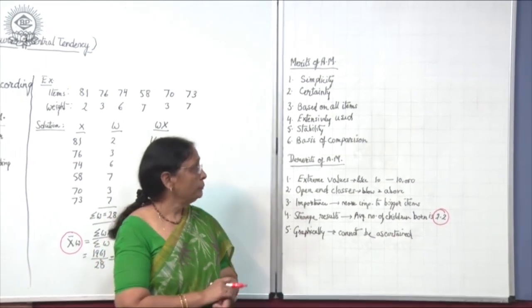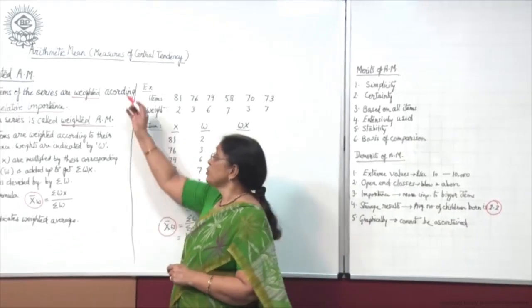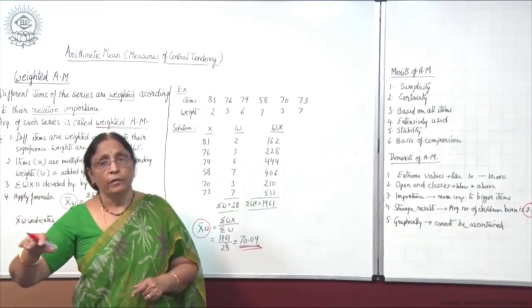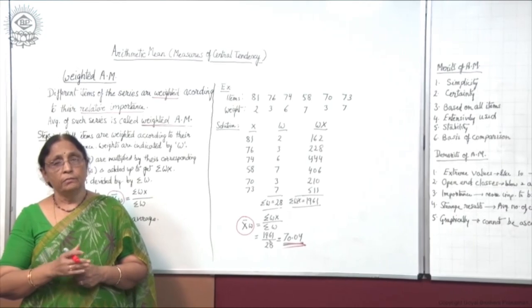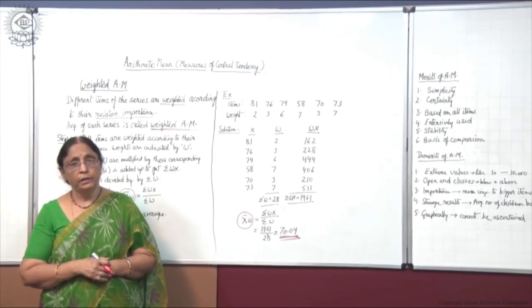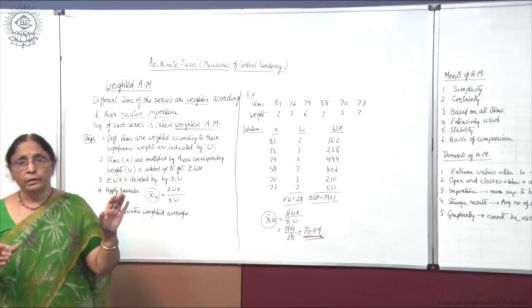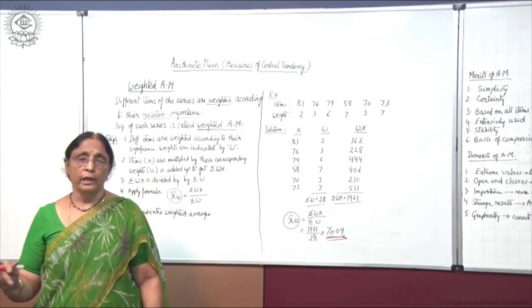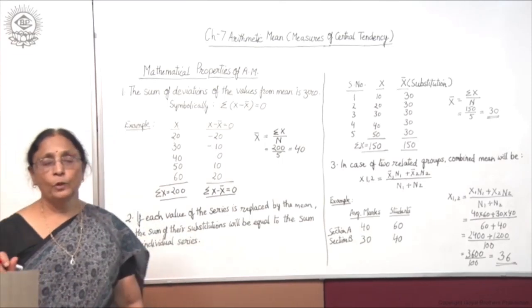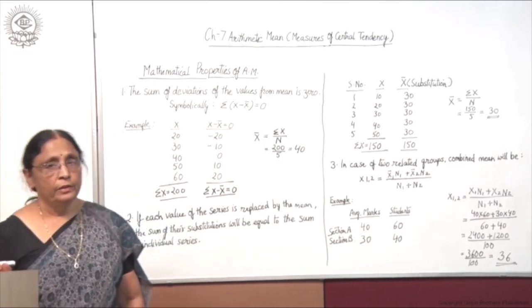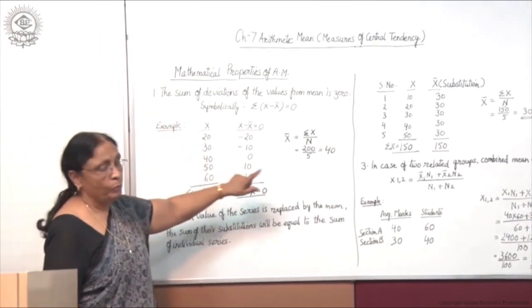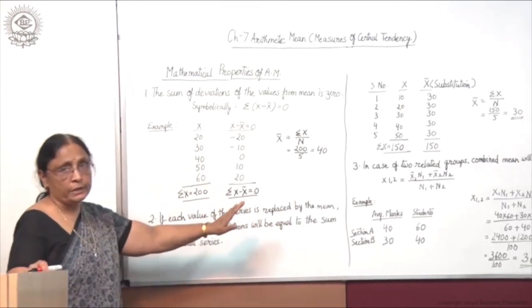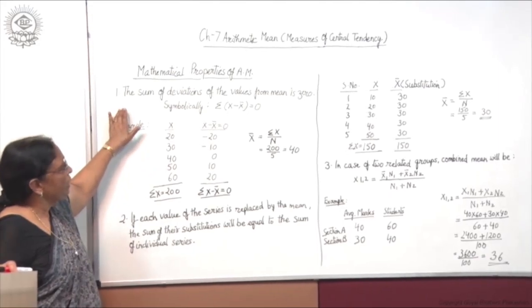So it is finished now — we have completed the chapter on measures of central tendency, one part only, that is arithmetic mean. Next time we will take another measure — mode and median. Practice more questions and learn more. Now we will take the mathematical properties of arithmetic mean. Here I have taken 3 main properties which are in your syllabus. I will explain these properties with the help of examples.